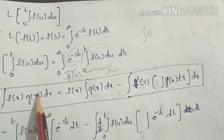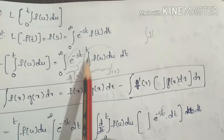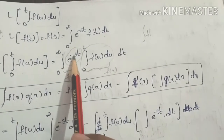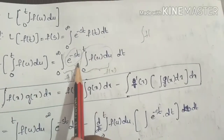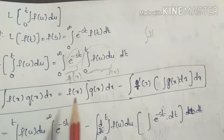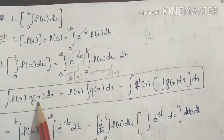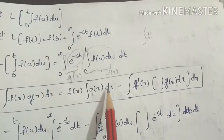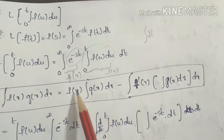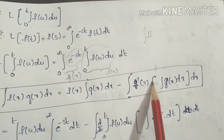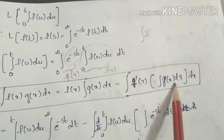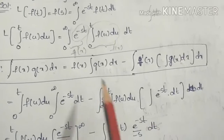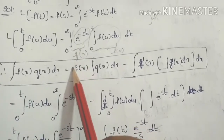We apply the integration by parts formula: the integral of f(x)·g(x) dx equals f(x)·∫g(x) dx minus the integral of f'(x)·[∫g(x) dx] dx. We use this formula to evaluate the double integral.